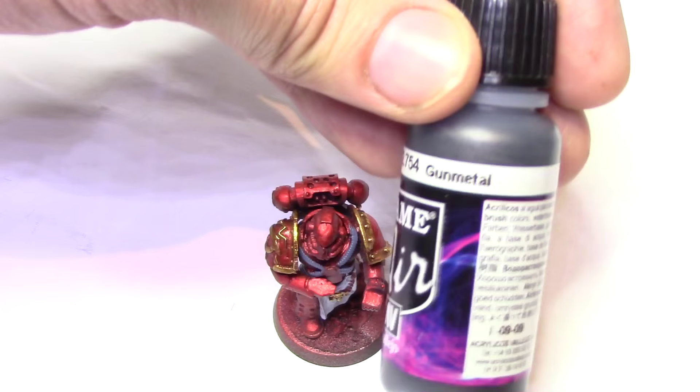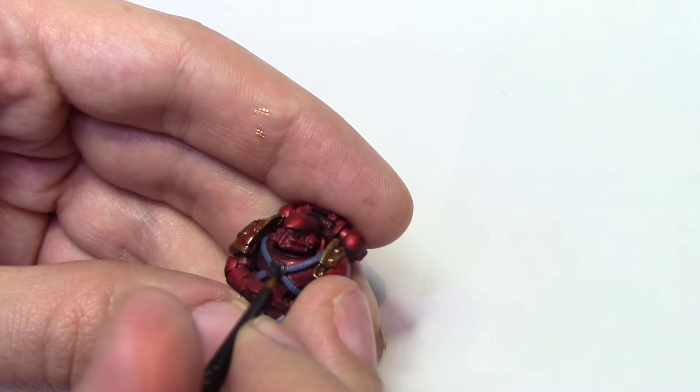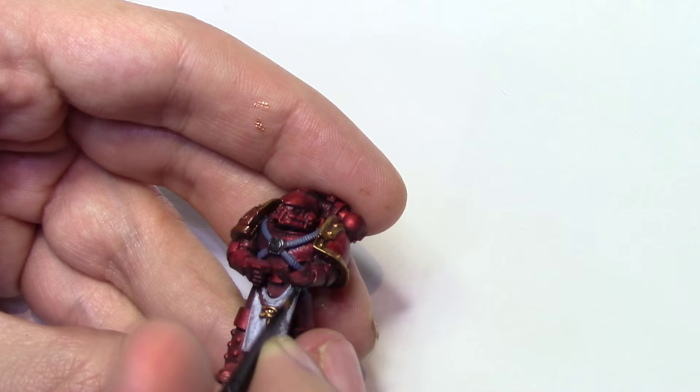Okay, now we're going to come in with Vallejo's Game Air Gunmetal. And this is basically just going to go on the little center piece and some of the vents and bits at the back on the backpack as well, also the little chain on the tabard.